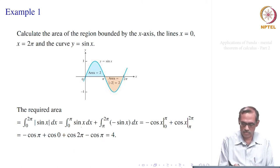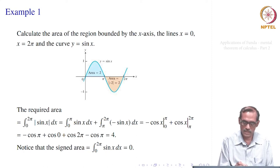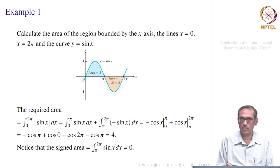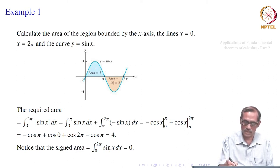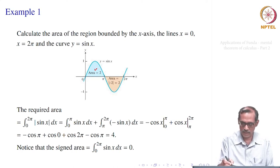That is how we used the fundamental theorem: integral of f'(x) equals f(x). Note that if you take the signed area, integral from 0 to 2π of sin x dx gives 0, because -cos(2π) and -cos(0) are the same. Geometrically, the area from 0 to π equals 2 and the integral from π to 2π of sin x gives -2, so they cancel. Taking absolute values gives area 2 + 2 = 4.